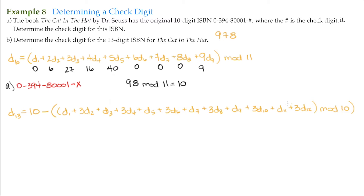Whatever this sum comes out to be, we subtract it from 10 to get the check digit. The first three digits are 9, 7, and 8. For 9: nine times one is 9. For 7: three times 7 is 21. For 8: eight. Then we use the original 10-digit digits starting with 0.